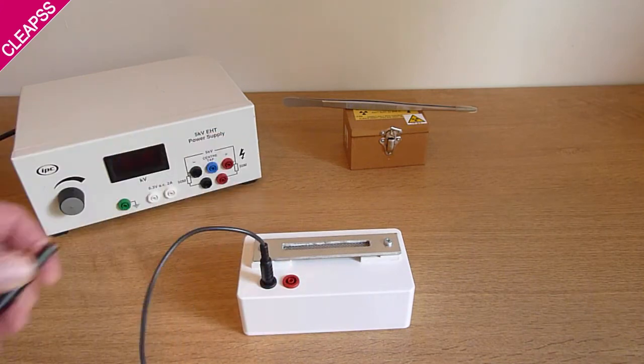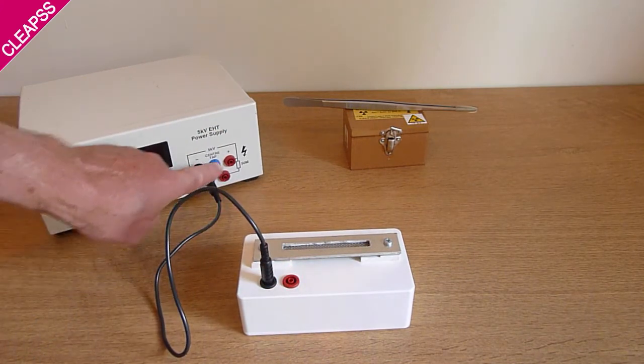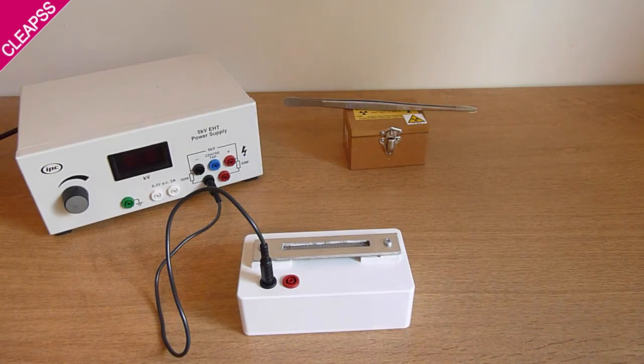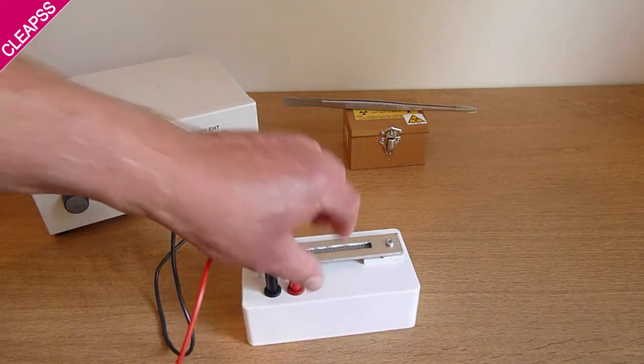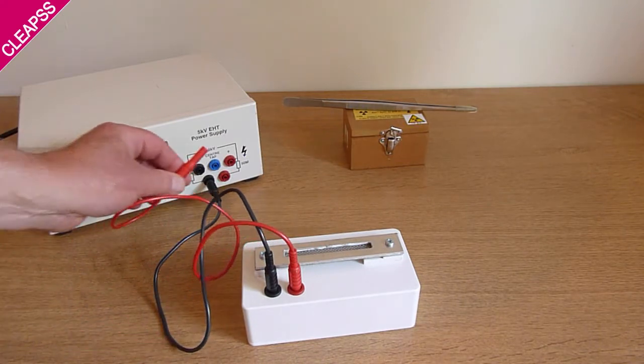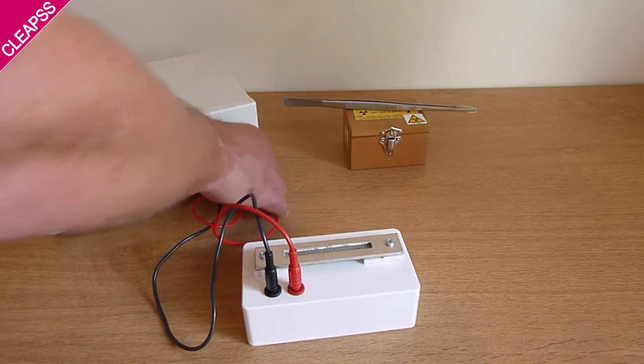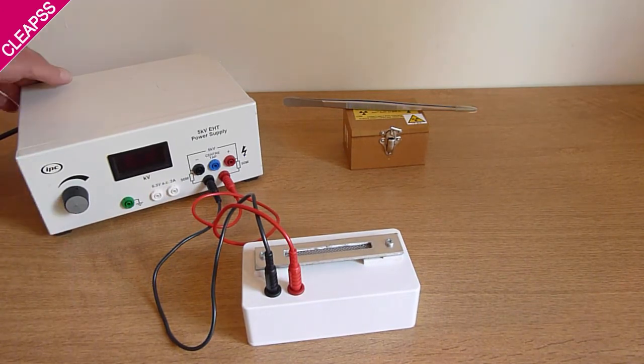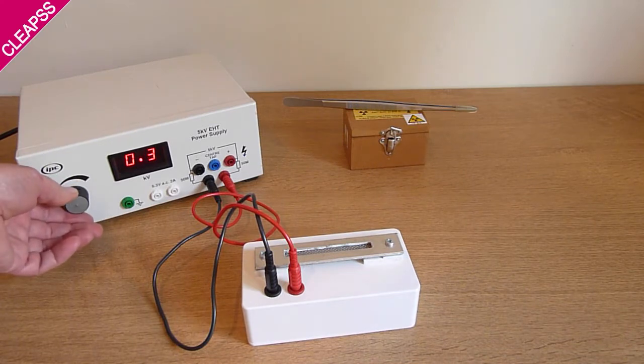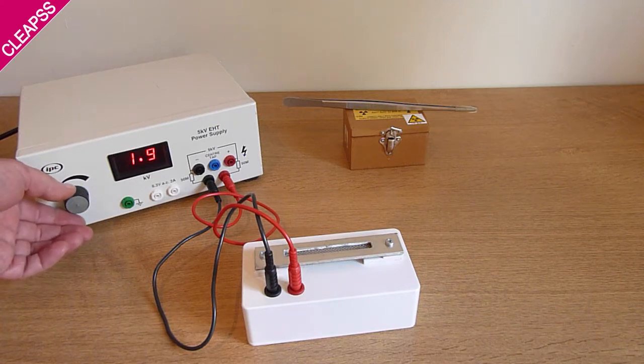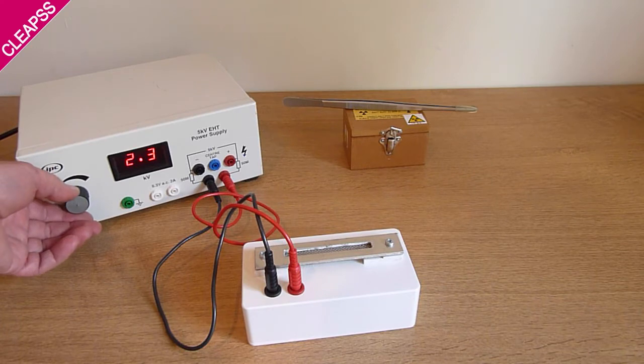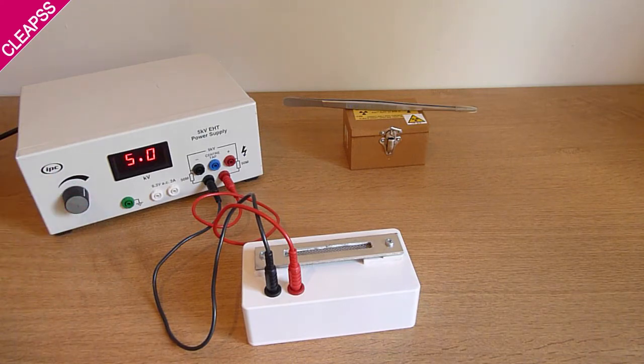I'm going to connect in series high value resistors, 50 to 100 mega-ohm resistors. Now this makes the spark counter work far more effectively. It stops the spark counter going into continuous discharge. Switch that on and gradually increase the voltage, somewhere between three to five thousand volts. If the spark counter starts to go into continuous sparking, just turn the voltage down a bit. Yeah, today I can get to five thousand volts.